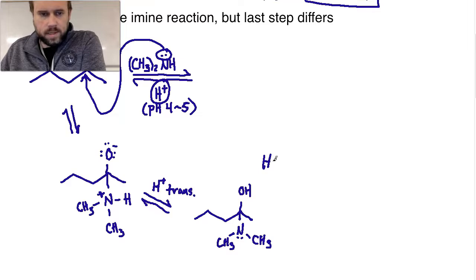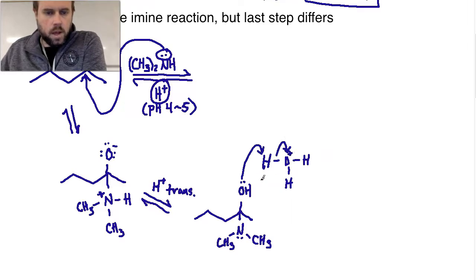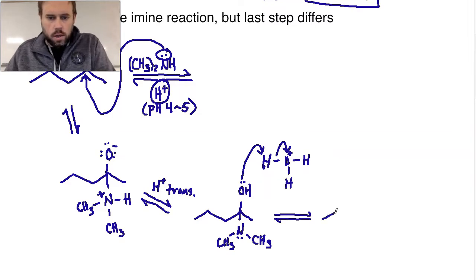We can represent the acid as H3O+ or just H+, depending on what your teacher wants to see. By doing that, we are going to turn the alcohol into water, and water makes a good leaving group. That's the goal as far as that step of the mechanism is concerned.